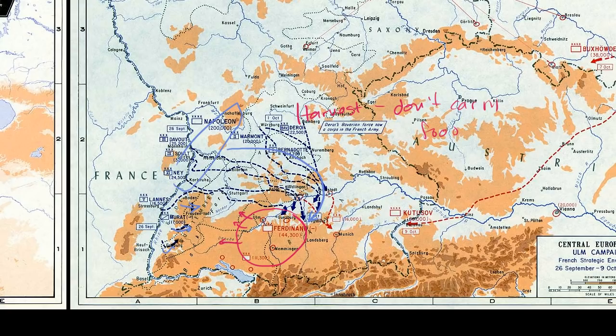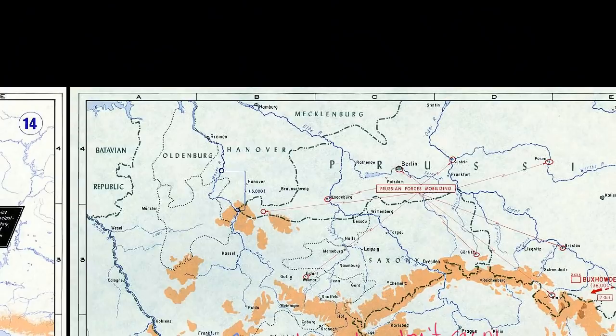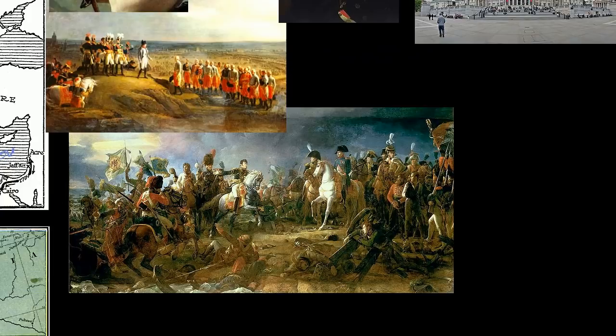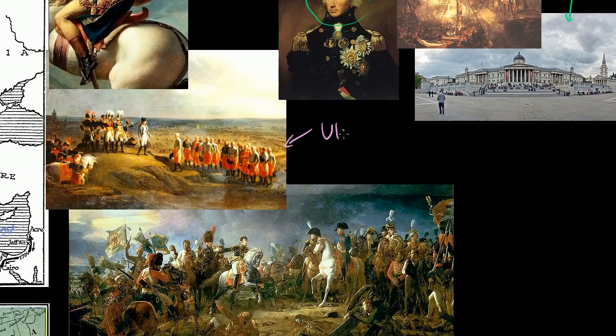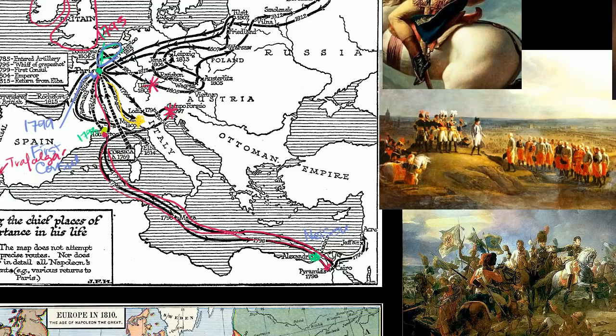Napoleon essentially went around the army and attacked the Austrians from behind, destroying them at Ulm before the Russians could reinforce. This is why Napoleon starts to view himself as invincible. It was a decisive victory — this is a painting of the surrender at Ulm. Then the combined Russian and Austrian forces regrouped and met Napoleon's forces again several weeks later at Austerlitz.